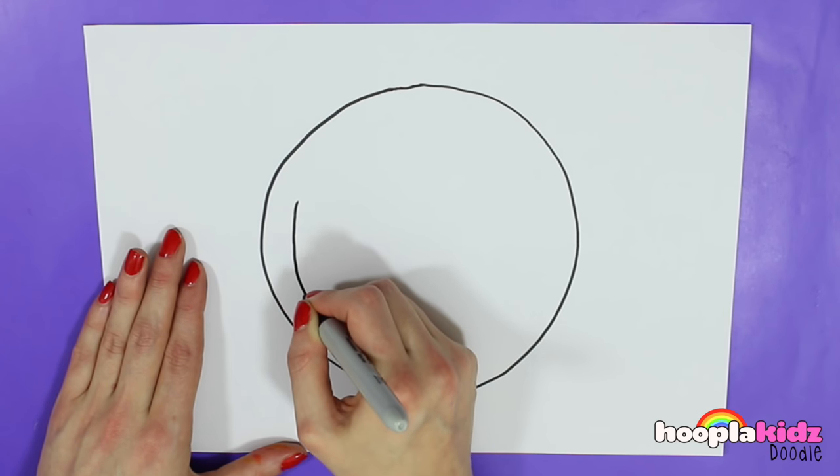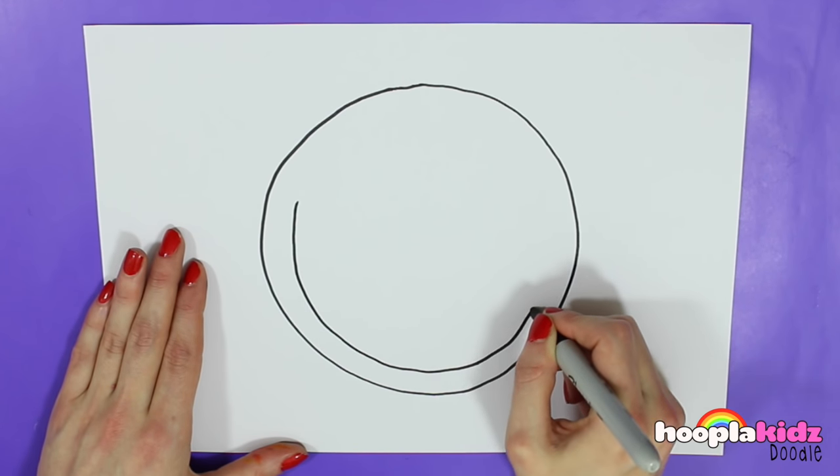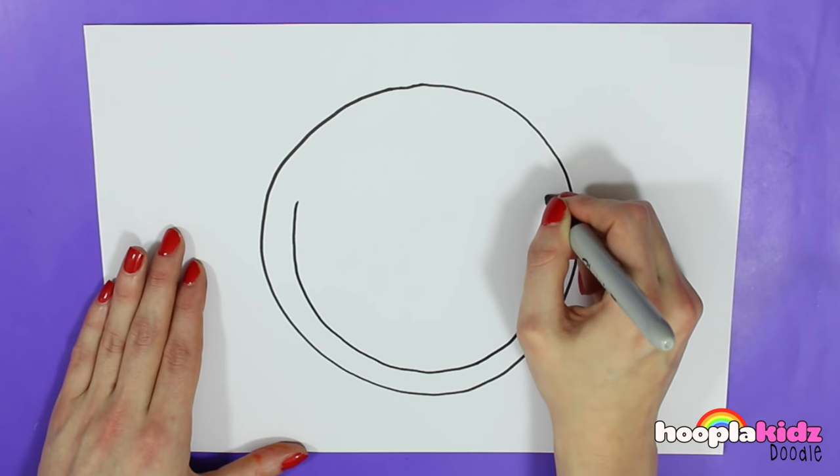Now we're going to draw another circle inside the larger circle, and this of course will create the crust.